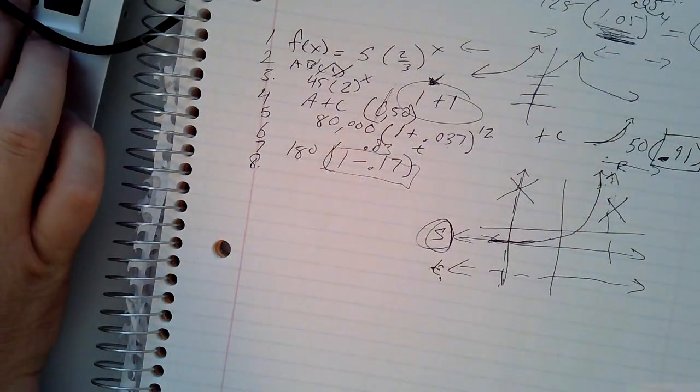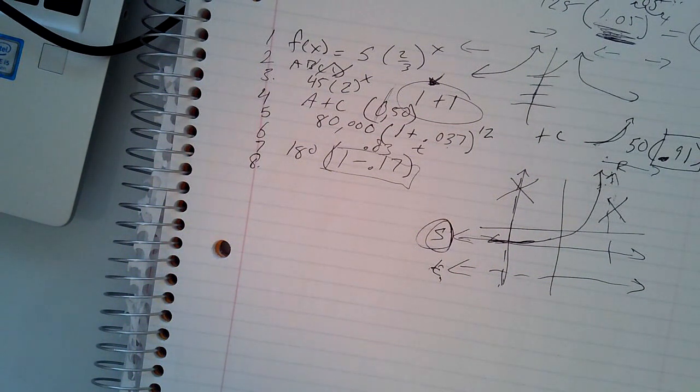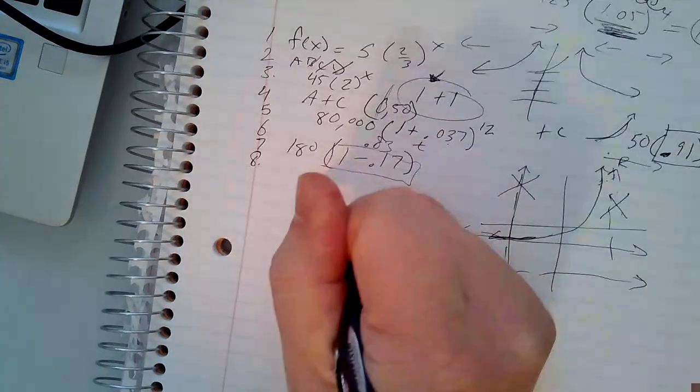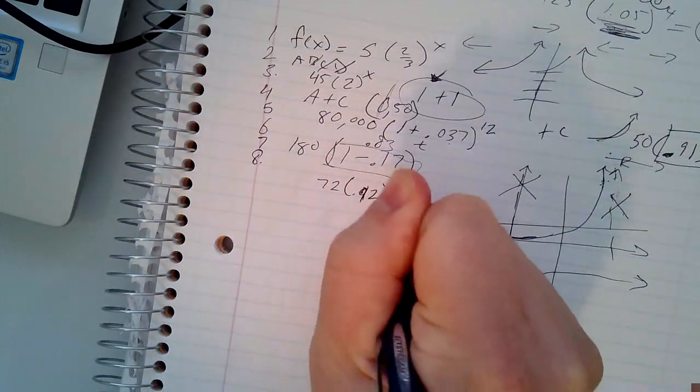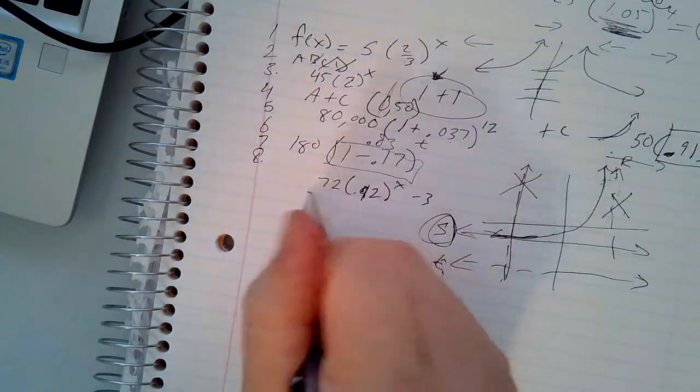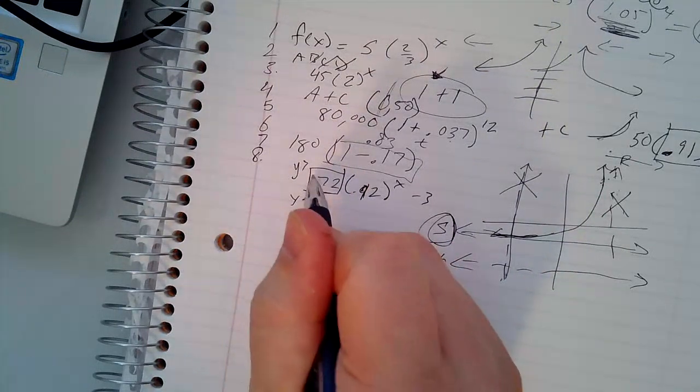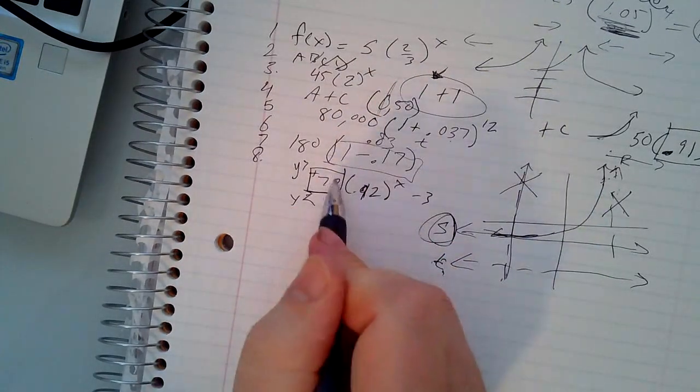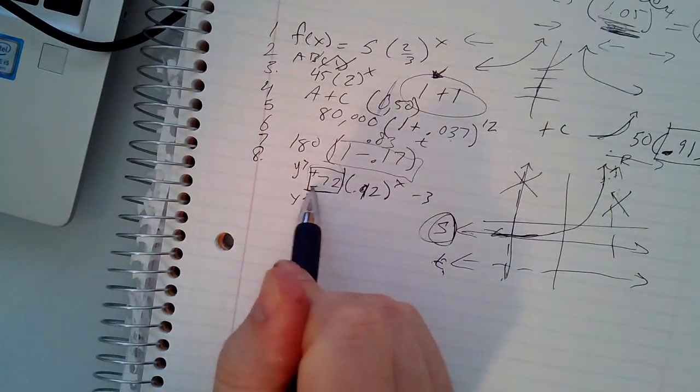Number eight, what is the range of the function? If you watch the range video, first of all, you can get rid of A and B automatically because A and B both have X, and we know that the range is Y. If you watch the one where we talked about domain and range, we said that the front number, it says 72(0.92)^(x-3). The front number gave you whether or not it's Y is greater than or Y is less than. If it's positive, it's Y is greater than. If this front number is a positive value, Y is greater than. If this front number is a negative value, Y is less than.